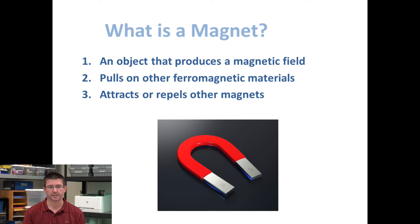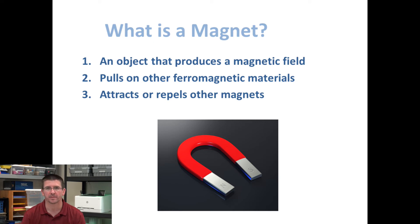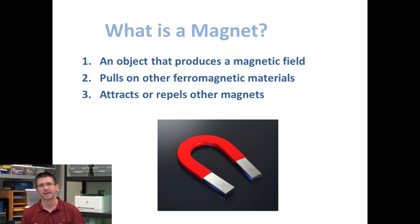The second characteristic that all magnets have is they pull on other ferromagnetic materials, and we'll be talking about ferromagnetic materials later. The third characteristic of magnets is that any magnet can attract or repel another magnet. Most people have probably stuck magnets together and seen them stick, but sometimes you try to put two magnets together and they push away. That's because all magnets have the ability to attract another magnet, but they can also repel other magnets depending on some situations we'll discuss later in the unit.